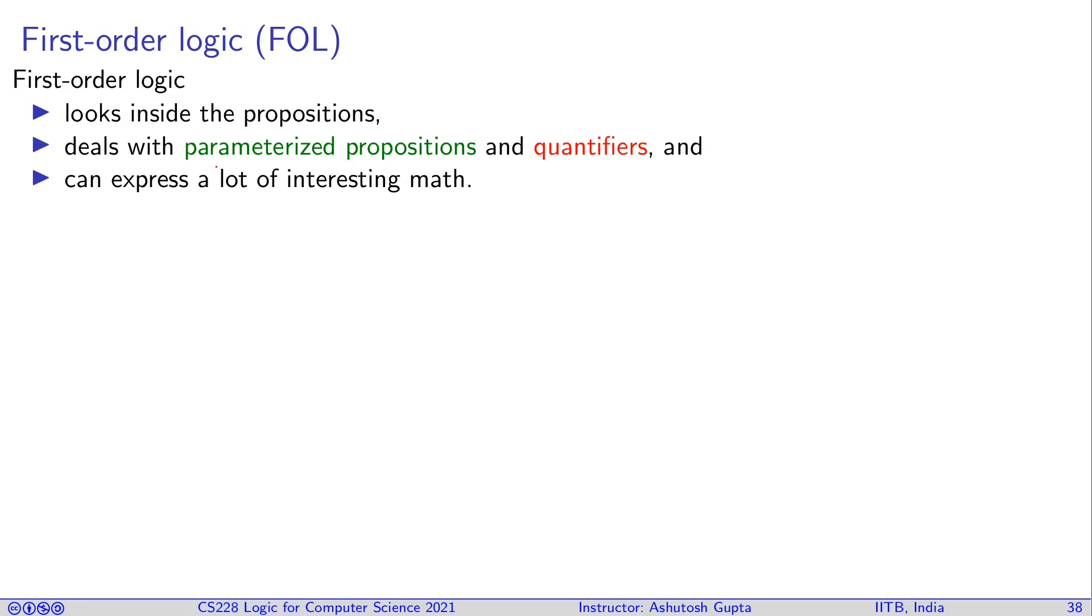These parameters you can quantify and then write quantifiers. You can say some parameter exists such that this proposition is true, or sometimes say for all parameters this is true. So these are the two kinds of quantifiers you can talk about. So two things were introduced: parameterized propositions and quantifiers. Using these two you can actually write a lot of interesting math.